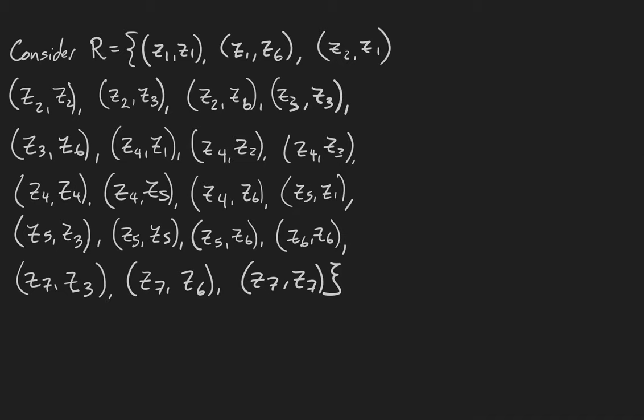Z4 is related to z1, z2, z3, z4, z5, and z6. Z5 is related to z1, z3, z5, z6. Z6 is related to itself. Z7 is related to z3, z6, and itself.